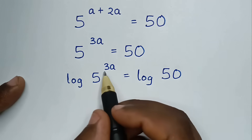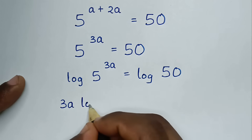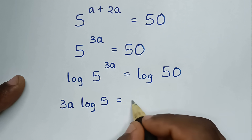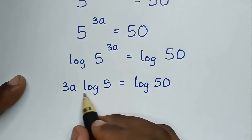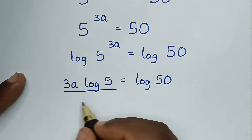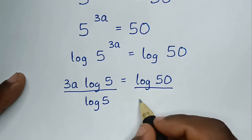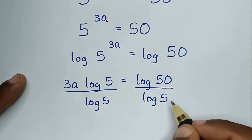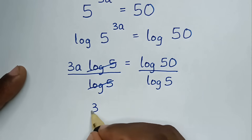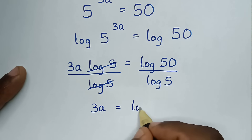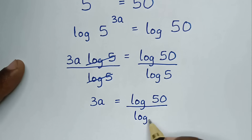Then this power of 3a will move to the front, so it will be 3a times log of 5 is equal to log of 50. Then we divide both sides by log of 5, so log of 5 cancels, giving 3a is equal to log of 50 over log of 5.